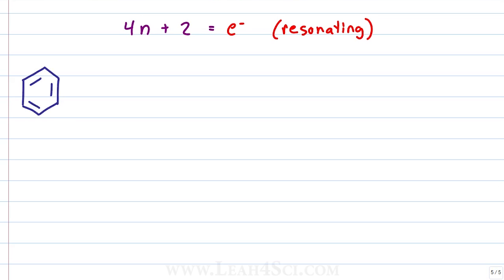We'll start with benzene since we're most familiar with it and set up the equation 4n plus 2 equals, let's see, 1, 2, 3, 4, 5, 6. We have 6 pi electrons all capable of resonating, let's solve for n.